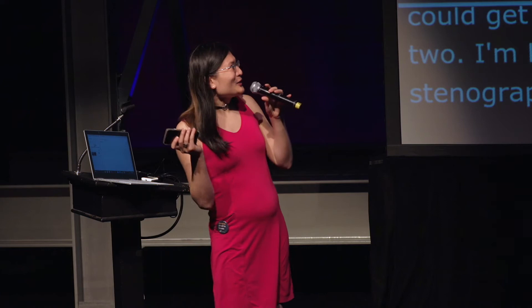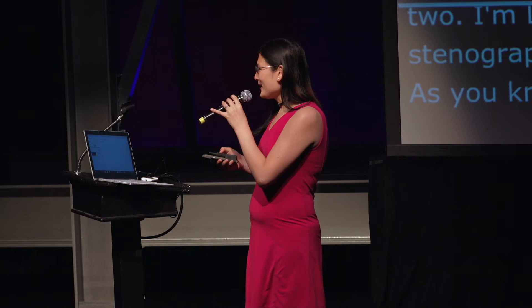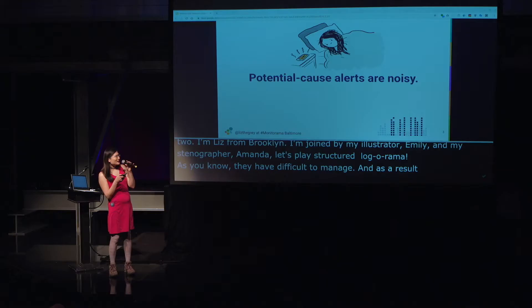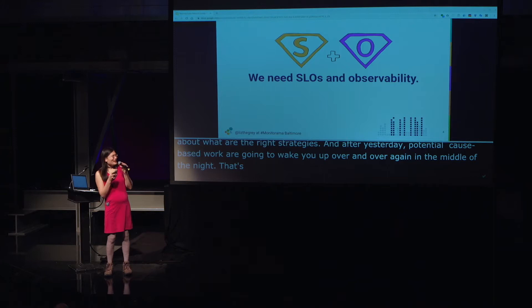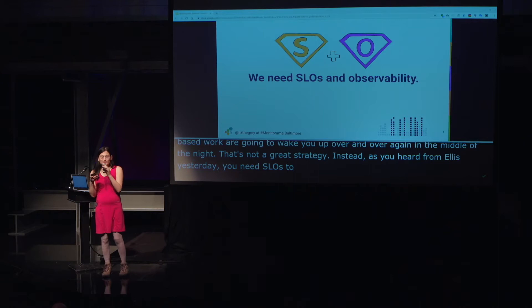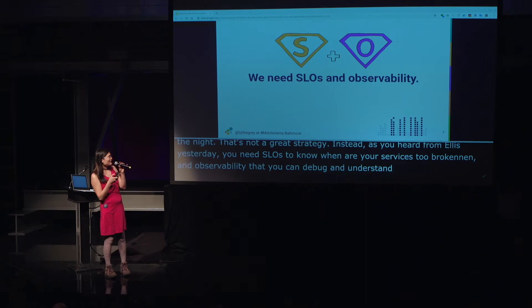Our complex systems are really, really difficult to manage, and as a result we need to think about what are the right strategies. We can all agree after seeing the talks yesterday that potential cause-based alerts are going to wake you up over and over again in the middle of the night. So that's not a great strategy. Instead, as you heard from Alex yesterday, you need SLOs to know when your services are too broken, and you need observability so that you can actually debug and understand what's going on inside of your services.